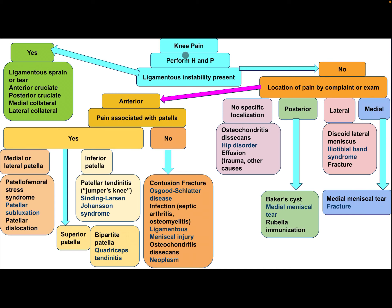How to approach a child with knee pain after performing history and physical examination: Is there ligamentous instability present? If yes, the differential diagnosis includes ligamentous sprain or tear — anterior cruciate, posterior cruciate, medial collateral, and lateral collateral.